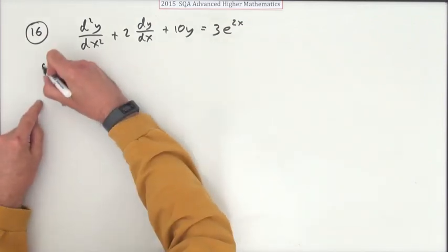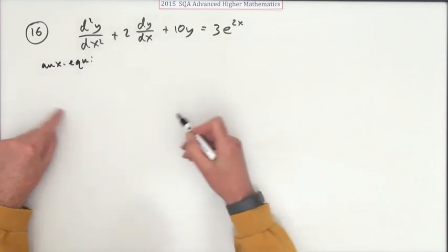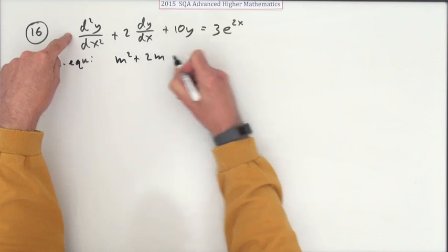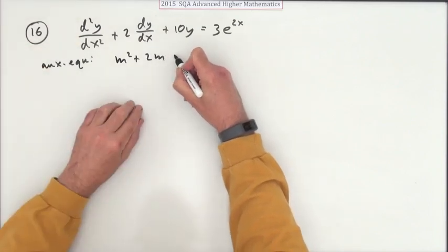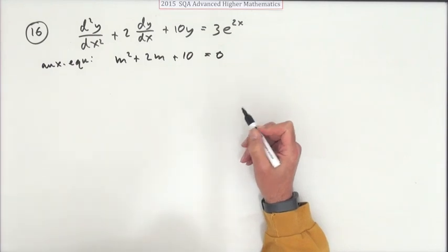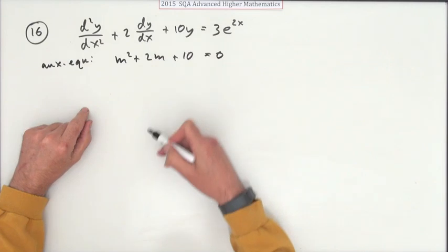We've got the first bit anyway. Let's form the auxiliary equation. So if you take the homogeneous part, we would have m² + 2m + 10 = 0. That's bad. You straight away there's a negative discriminant. That's not going to factorize, not with a +10.